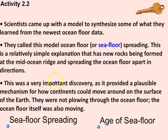Scientists developed the model of ocean floor — or seafloor — spreading, which explains that new rock forms at mid-ocean ridges and the ocean floor spreads apart in both directions. This was a very important discovery because it provided a plausible mechanism for how the continents move — something Wegener couldn't explain. People originally thought continents were plowing through the ocean, but now we know that whole plates are moving, not just the continents.